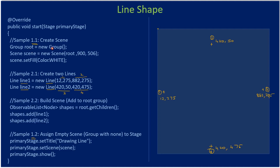We already created the root group node. We call root.getChildren(), which retrieves the observable list — a collection of nodes we'll use frequently in our JavaFX courses. I'm naming this collection 'shapes', then calling add() on it to add the two line objects, line one and line two, establishing them as children of the root group.